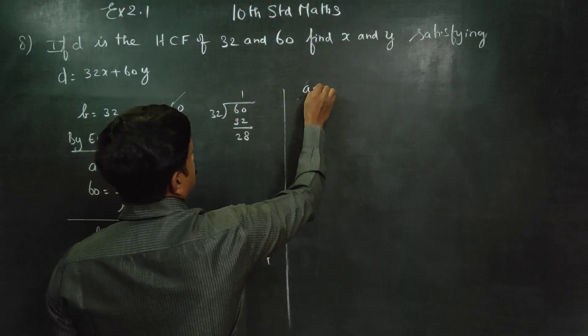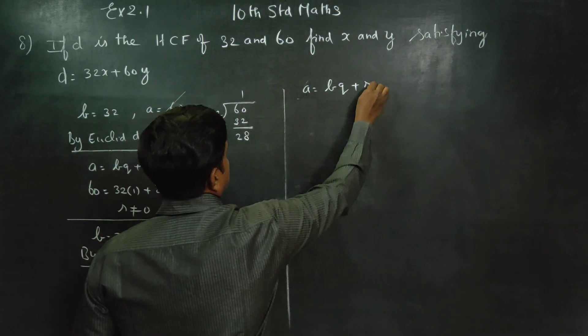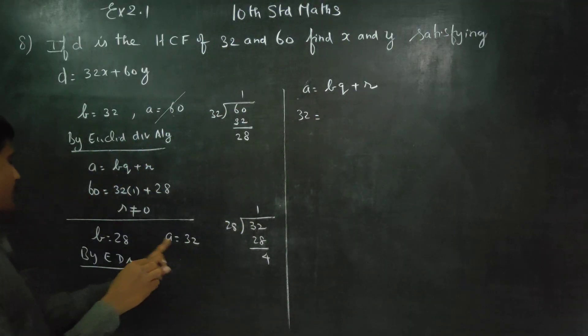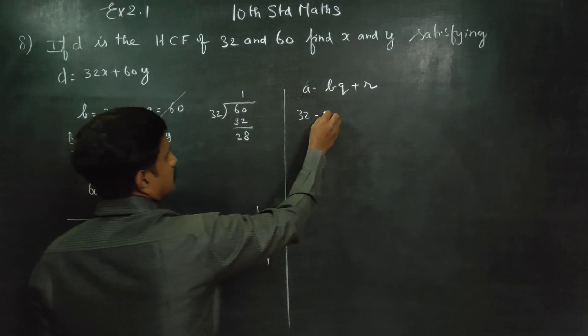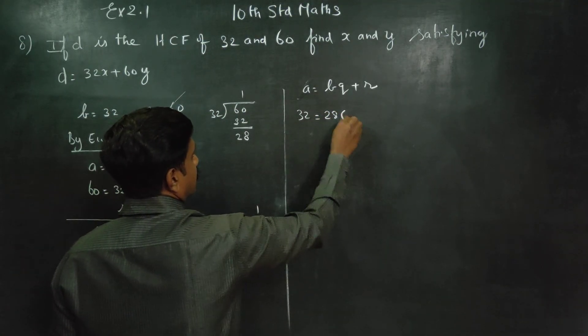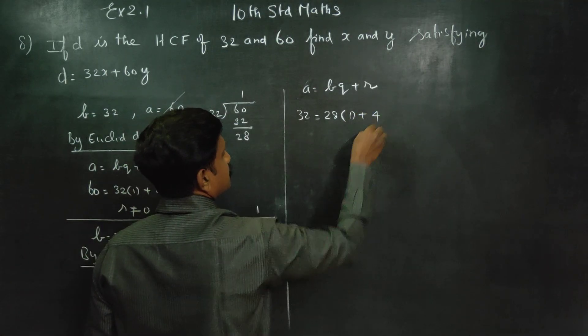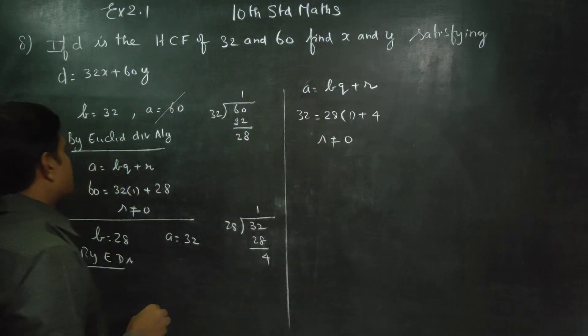A is equal to BQ plus R. Now 32 is equal to B times Q. BQ is 28, Q is 1, plus remainder is 4. R is not equal to 0.